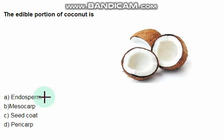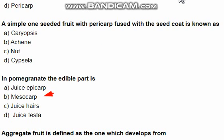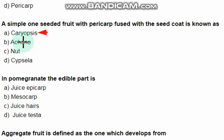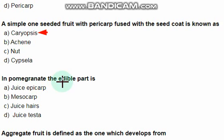The right option is option A: endosperm. A simple one-seeded fruit with pericarp fused with seed coat is called caryopsis — the right option is option A.